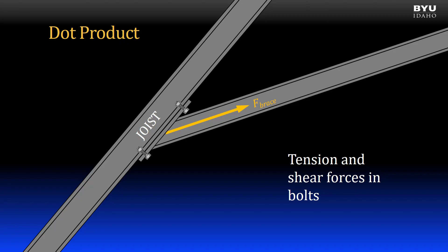A convenient way to design this connection is to break the force at the connection into two components. One component in pure shear perpendicular to the bolts and another component in pure tension parallel to the bolts. If we know the angle between the joist and the brace, then we can find the shear component using a vector operation called the dot product.